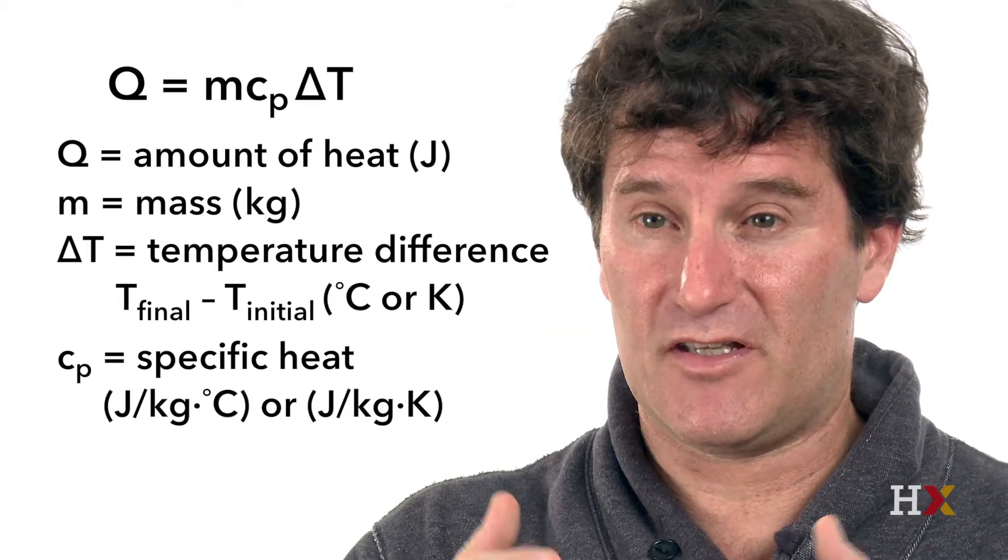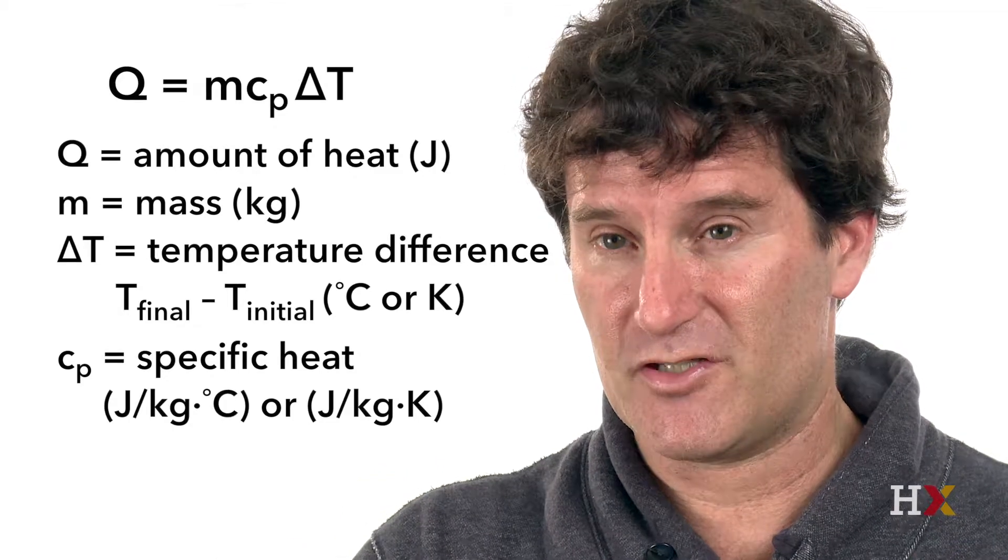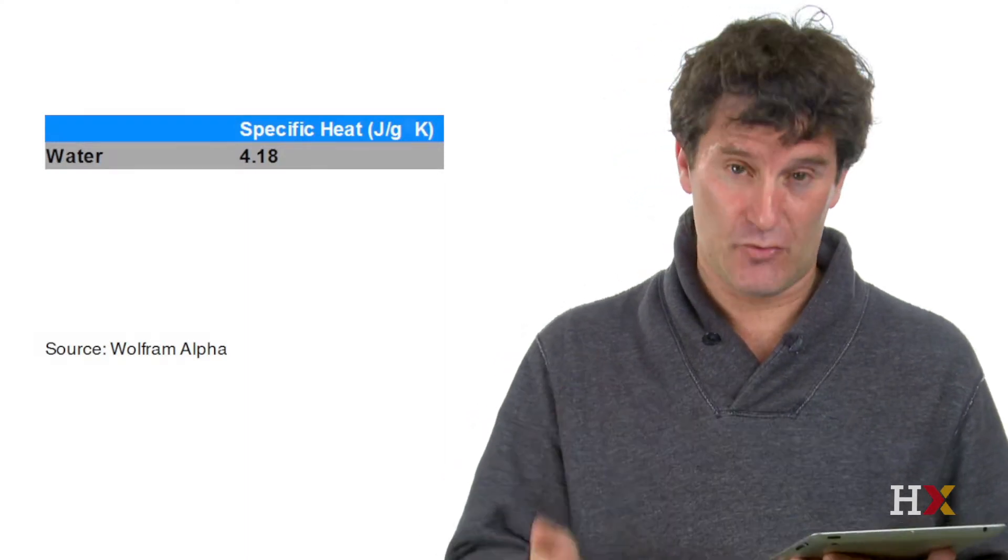And this is a number that we will give you and that is different for different foods. So it turns out that the specific heat for water is 4.18 joules per gram degree Kelvin. That's the specific heat for water.